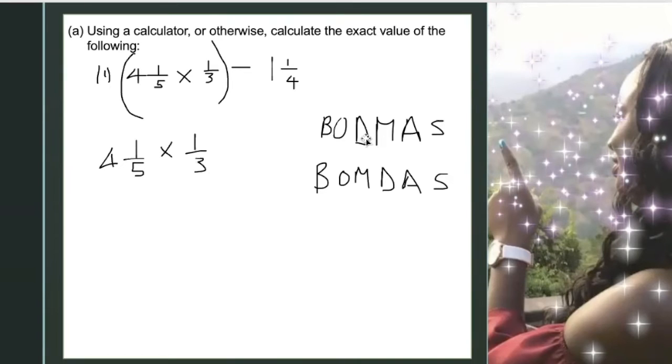Students usually confuse this saying it's divide and multiply and multiply and divide. But this is saying that you multiply or divide first before you add or subtract. Now if we had division and multiplication in one line, we move from left to right.